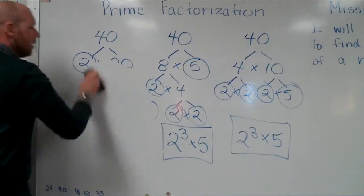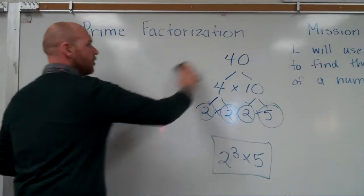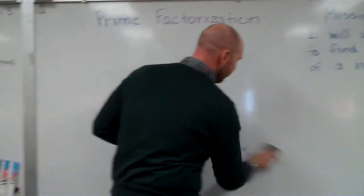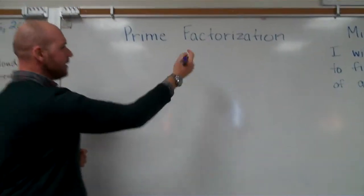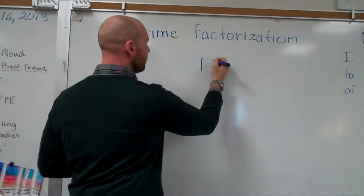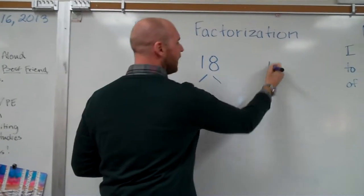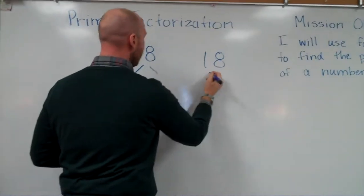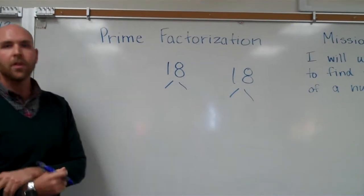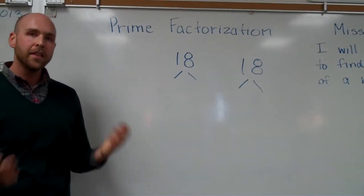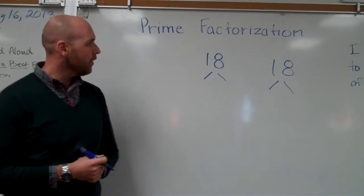Now on the next one, we're going to show you another example and then you guys are going to try some on your own. Alright. Let's take 18. There's 2 ways to make 18. Write these down and think of the 2 ways to make 18. Go ahead. If you need to pause me, that's great. Figure it out.